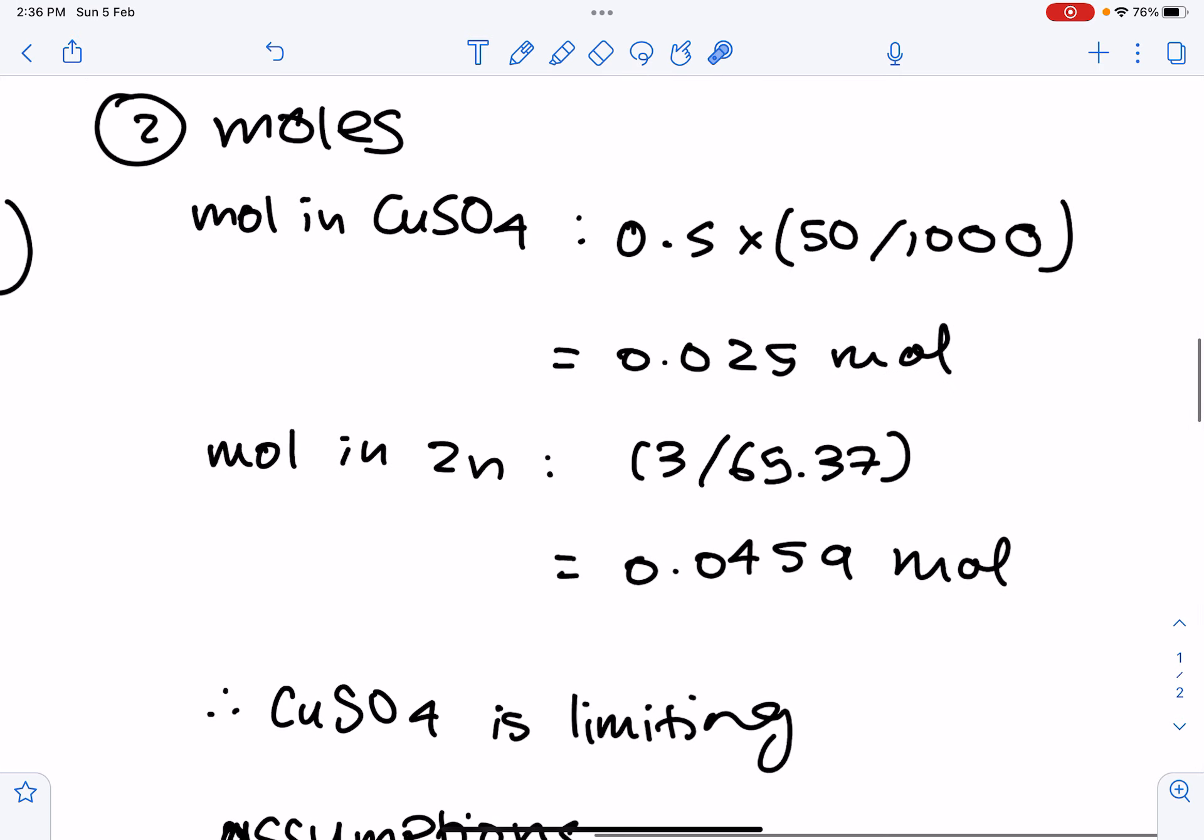For the moles in zinc, we're using the formula mass divided by atomic mass. So, 3 grams divided by 65.37 gives us 0.0459 moles. So, as we can see, the copper sulfate moles is smaller, so it's the limiting reactant.